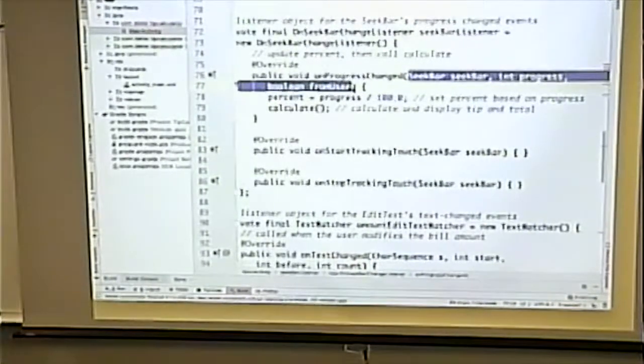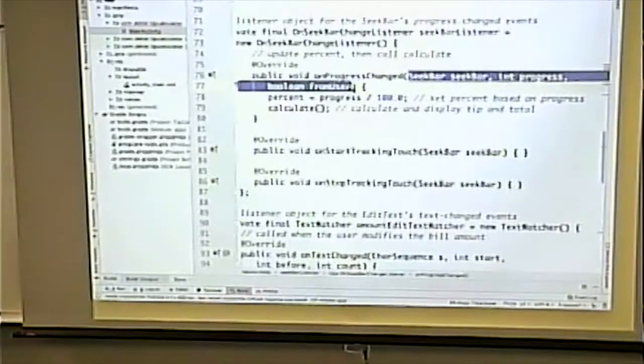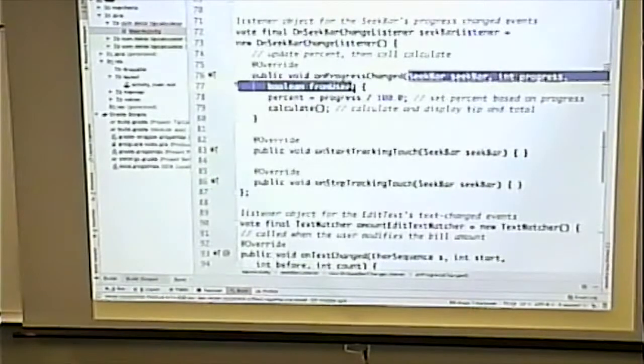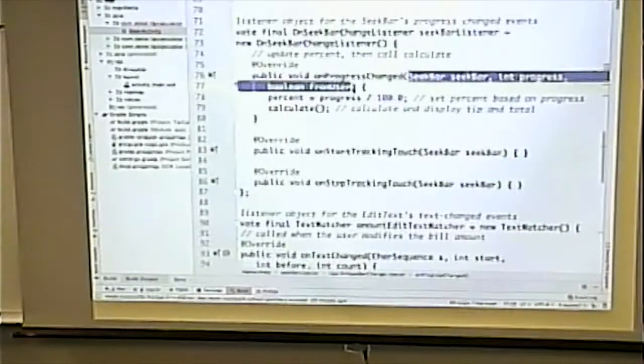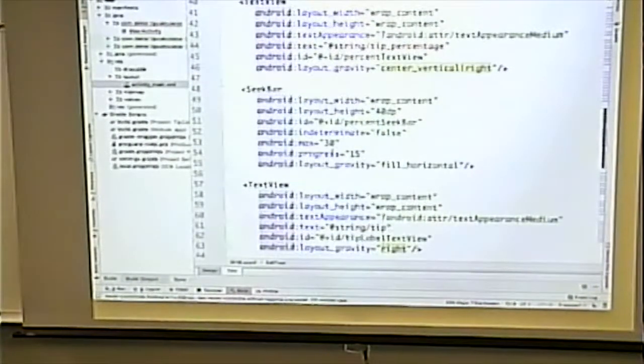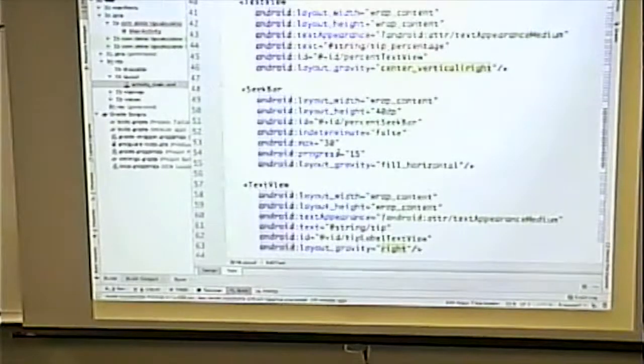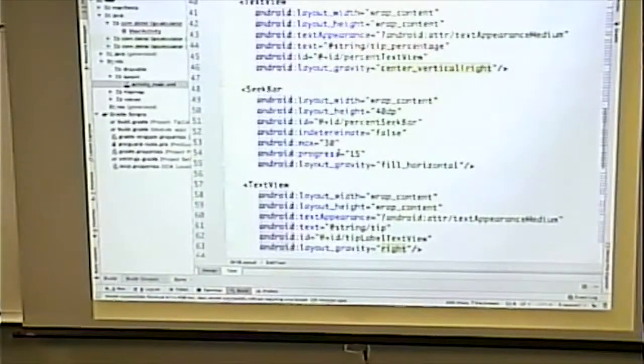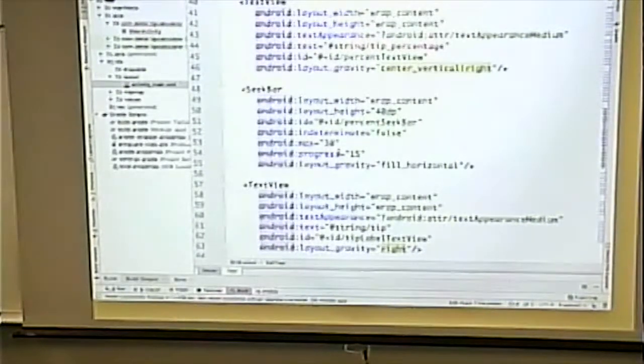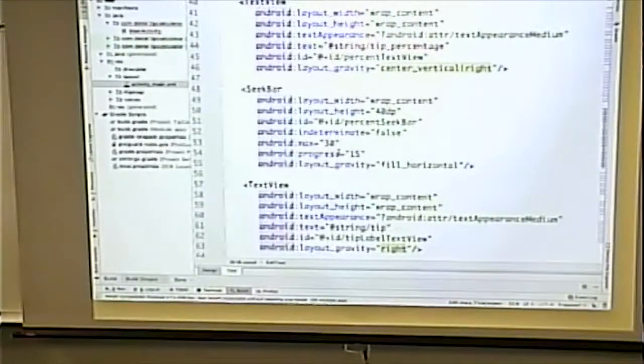This guy gets past the argument of the seek bar. Cool. It also gets past an integer saying the progress. Remember, it's one of the attributes of a seek bar. Remember we defaulted it to 15. And we said this can go up to 30. So in other words, the progress is going to be a value from 0 to 15. I want to show you something. This is seek bar. And here's some of the attributes on it.